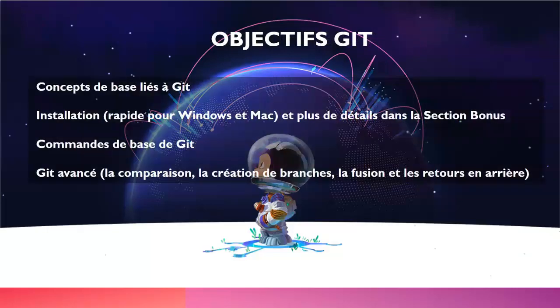We will start with the basic concepts of Git. There will be a quick installation for Windows and Mac, and if you want more details about that, you can find them in the bonus section. Once you have understood Git and installed all the necessary tools, we will begin with the basic commands of Git. As we progress through the basic commands, you will learn how to create your first Git project.